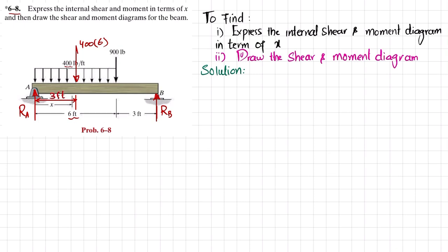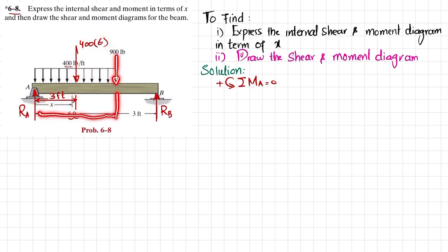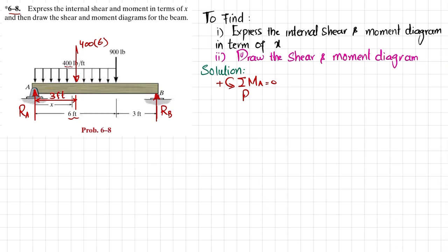Now we apply the equilibrium condition. The first condition is that the sum of all moments about point A equals zero, taking counterclockwise moments as positive. About point A: the moment due to the 400 × 6 load at a perpendicular distance of 3 feet is clockwise (negative). The second moment is 900 times a perpendicular distance of 6 feet, also clockwise (negative). The third moment is Rb times perpendicular distance of 9 feet, counterclockwise (positive).